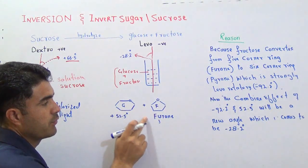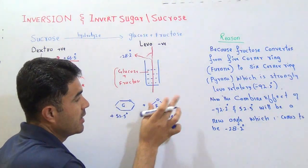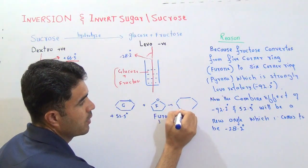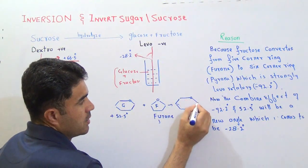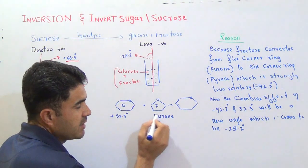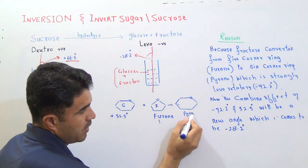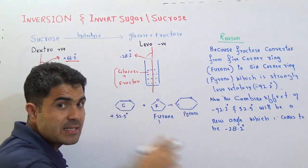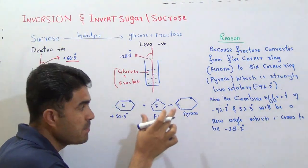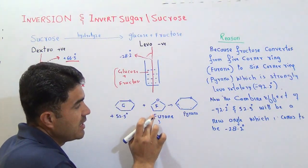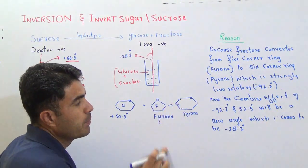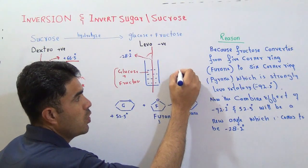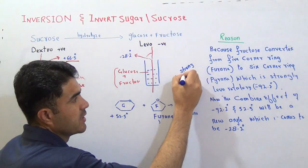The fructose in the five-membered furanose form is very unstable, so it converts from the five-membered ring to a six-membered ring — that is, from furanose to pyranose form. The pyranose form is a six-membered ring. The whole reason behind the phenomenon of inversion is this: fructose is converted from furanose (five-membered ring) to pyranose (six-membered ring), and this pyranose form of fructose is a strong levorotator — it bends light towards the left side.